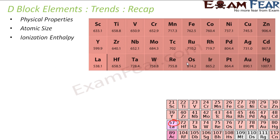Talking about ionization enthalpy: ionization enthalpy is the minimum amount of energy required to remove one electron to an infinite distance from an atom in the gaseous state. This value generally increases from left to right, but there are some irregular trends. This ionization enthalpy actually depends on the effective nuclear charge.